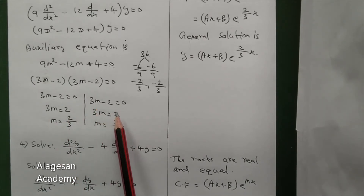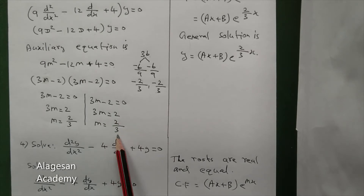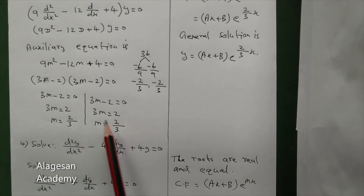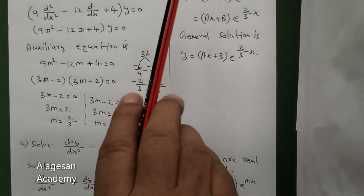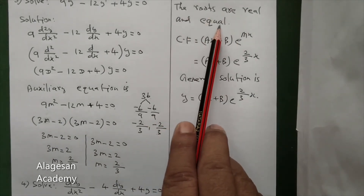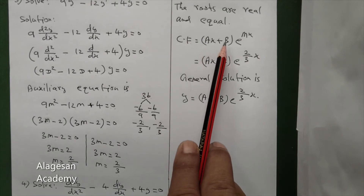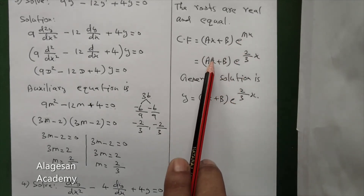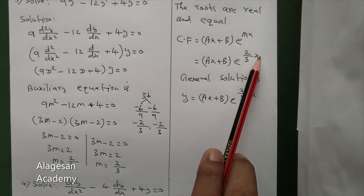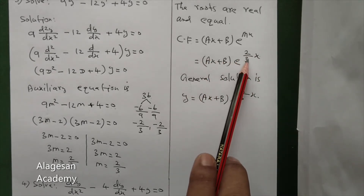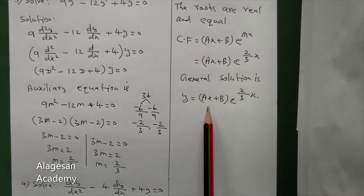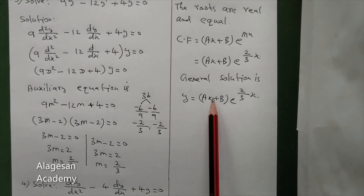3m minus 2 equal to 0, so 3m equal to 2, m equal to 2 by 3. So here the two roots are real and equal: m equals 2 by 3, 2 by 3. Then the complementary function CF is: ax plus b into e power mx. So CF equals ax plus b into e power 2 by 3 x. That's all — that is the CF. Therefore the general solution is y equal to ax plus b, e power 2 by 3 x.